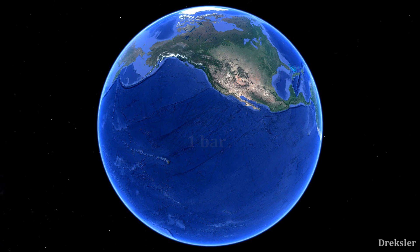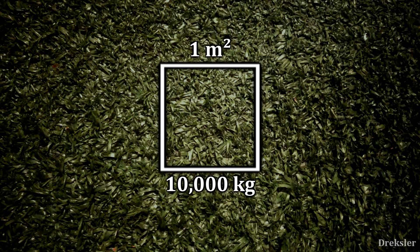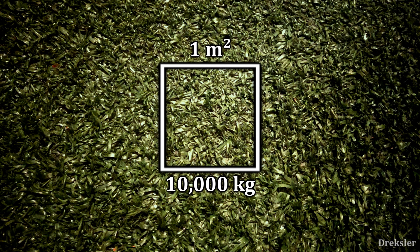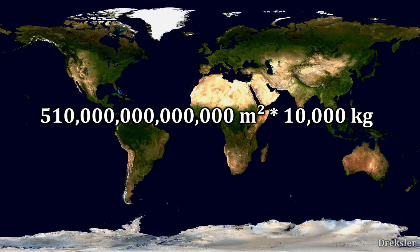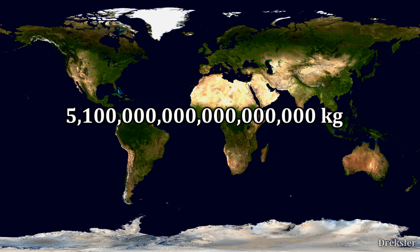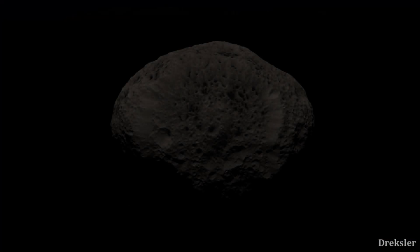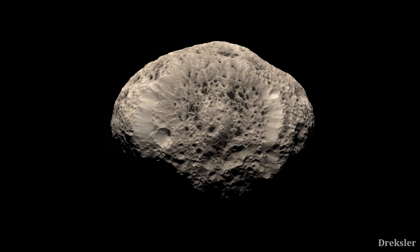Because of that non-significant difference, we can apply the calculation of 10,000 kilograms per square meter onto the entire surface area of the Earth. Multiplying 10,000 kilograms by the total surface area of 510 trillion square meters, we get 5.1 quintillion kilograms — that is the mass of Earth's entire atmosphere. For perspective, Saturn's moon Hyperion has pretty much that mass and is about 350 kilometers long at its longest.